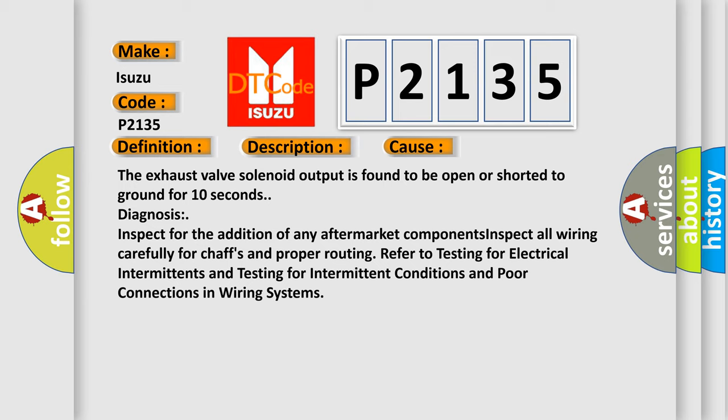Diagnosis: Inspect for the addition of any aftermarket components. Inspect all wiring carefully for chaffs and proper routing. Refer to testing for electrical intermittents and testing for intermittent conditions and poor connections in wiring systems.